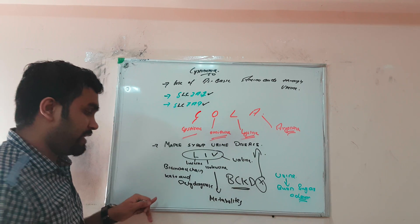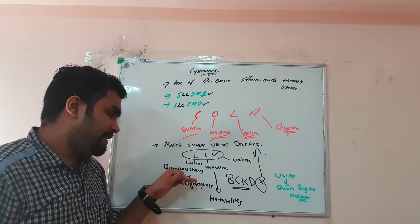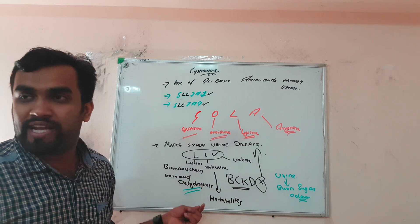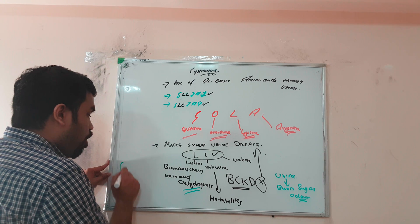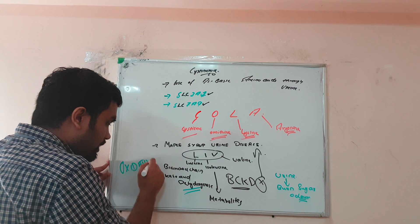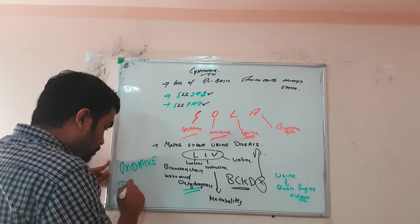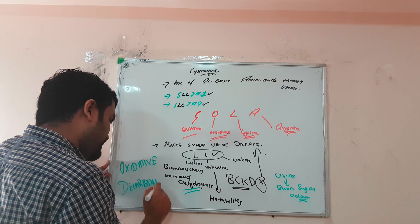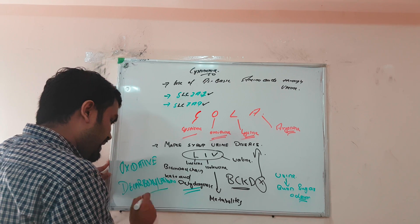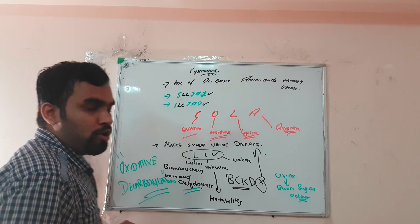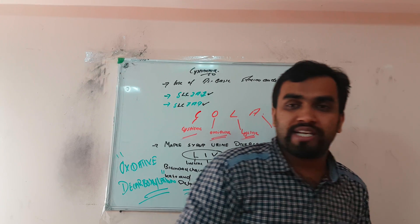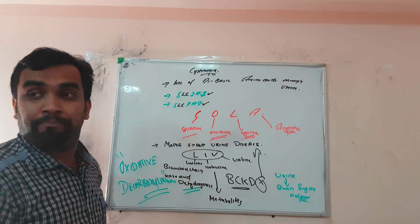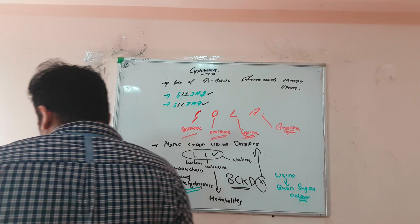An important MCQ point: although the enzyme is called branched-chain keto acid dehydrogenase, the actual reaction is not dehydrogenation — it is oxidative decarboxylation. Remember: the reaction is oxidative decarboxylation, despite the enzyme name containing 'dehydrogenase.'